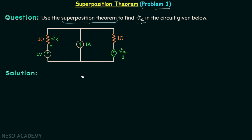Now we will move on to the calculation of Vx using the superposition theorem. After the analysis of the given network, we can say that we have 3 sources present: the first is an independent source, the second is also an independent source, and the third is a dependent source.